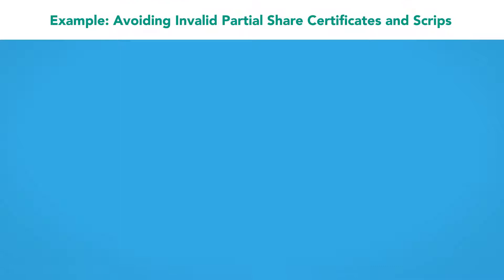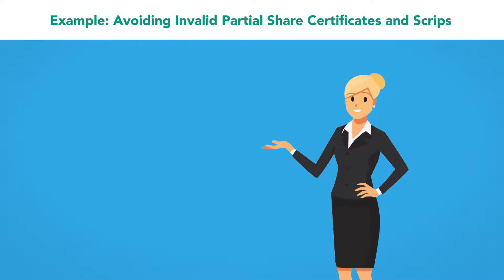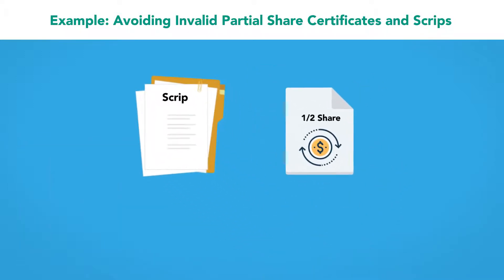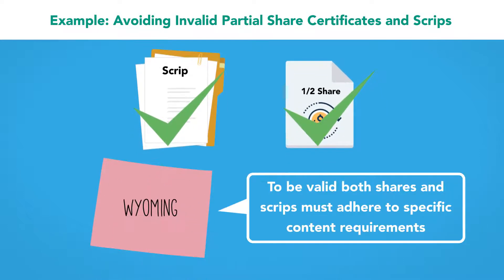Example: avoiding invalid partial share certificates and scrip. If the corporation allows it, a shareholder can own a fractional share. In some cases, a corporation can issue a written note, a scrip, that authorizes its bearer to trade it for stock in the company. The legality of using partial shares or scrip are not usually a potential problem when drafting bylaws, but in Wyoming, to be valid both shares and scrip must adhere to specific content requirements.